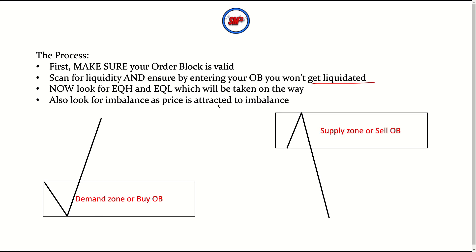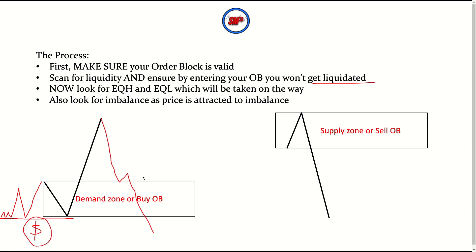An example of getting liquidated when trading an order block: if at your buy order block there is some sort of support right below this area — some sort of liquidity — it is very likely that smart money will come and show some reaction to this order block, and then afterwards drop way down. The reason that happens is because price is coming to grab that area of liquidity below.